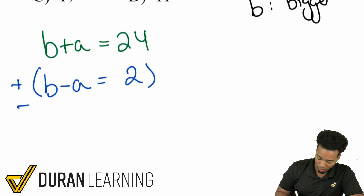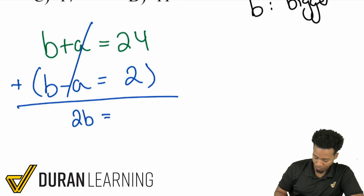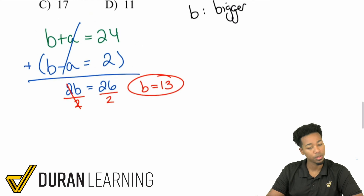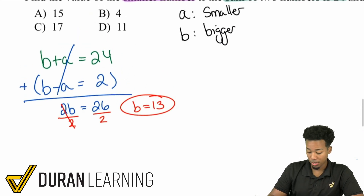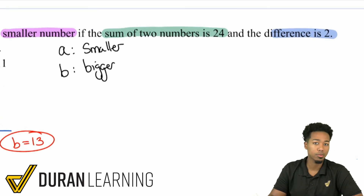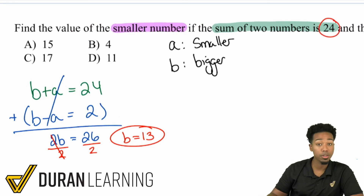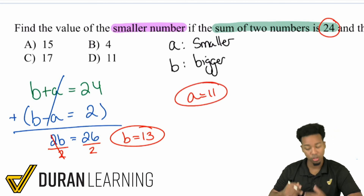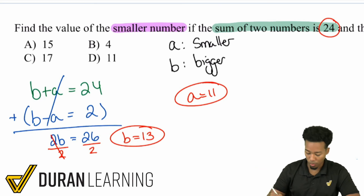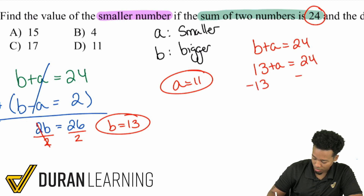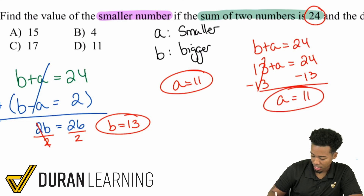Add the equations together to eliminate: b plus b is 2b, and 24 plus 2 is 26. Divide both sides by 2: b equals 13. That's the bigger number. Subtract 2 from 13 to get 11, the smaller number. Or plug b equals 13 back into a plus b equals 24: 13 plus a equals 24, subtract 13 from both sides, and a equals 11.